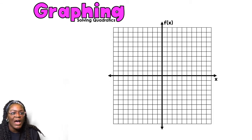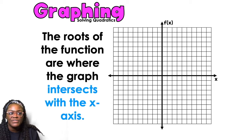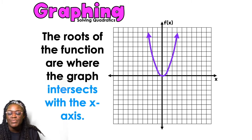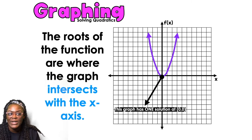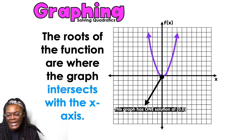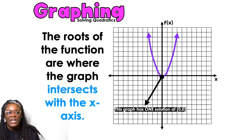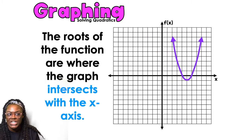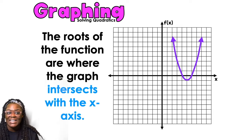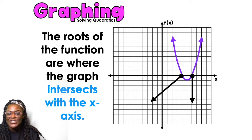Let's talk about graphing first. When you are graphing, the roots of a function are where the graph intersects the x-axis. If I have this parabola that touches the x-axis at one spot, it has one solution: (0, 0) — one root, one x-intercept. This next graph touches and goes through the x-axis twice, so it has two solutions.